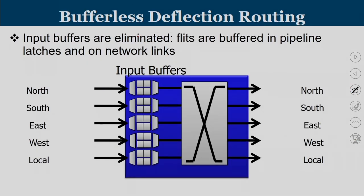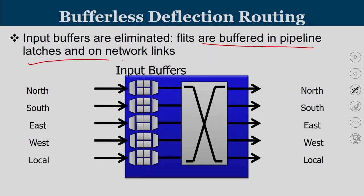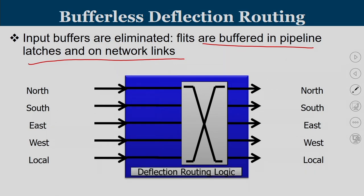Bufferless deflection routing is a concept where input buffers are eliminated. Flits are buffered in pipeline latches and network links. In this approach, we eliminate the virtual channel buffers and instead put input latches — this is what is known as deflection routing logic.